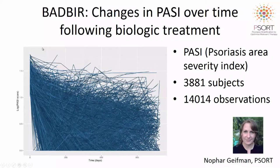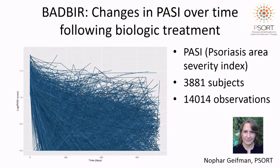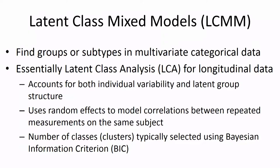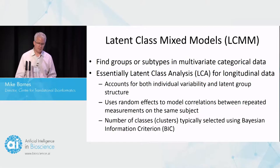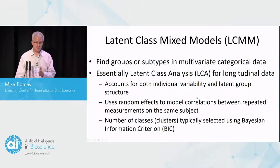This is what the data looks like when you take PASI data — the Psoriasis Area Severity Index — which is a measure of response to biologic treatment. Looking at 3,800 subjects and 14,000 observations, if you plot it all out, you need to try to make sense of this and pick out responder categories. Nophar applied latent class mixed models, LCMMs, to find groups and subgroups in this data. This is a latent class analysis on longitudinal data that accounts for both individual variability and the latent group structure. It uses random effects to model correlations between repeated measurements in the same subject.